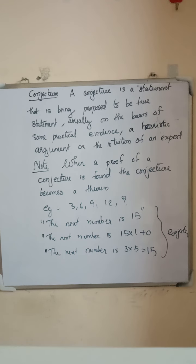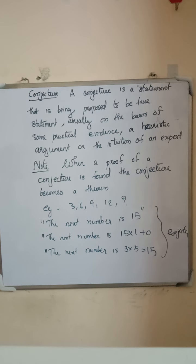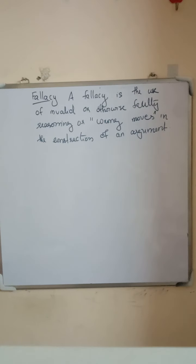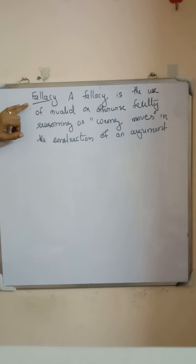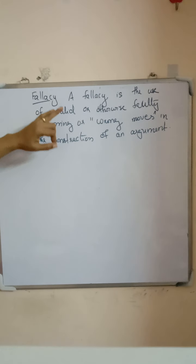Note that when a proof of a conjecture is found, the conjecture becomes a theorem. If we find a proof for a conjecture, that conjecture becomes a theorem.